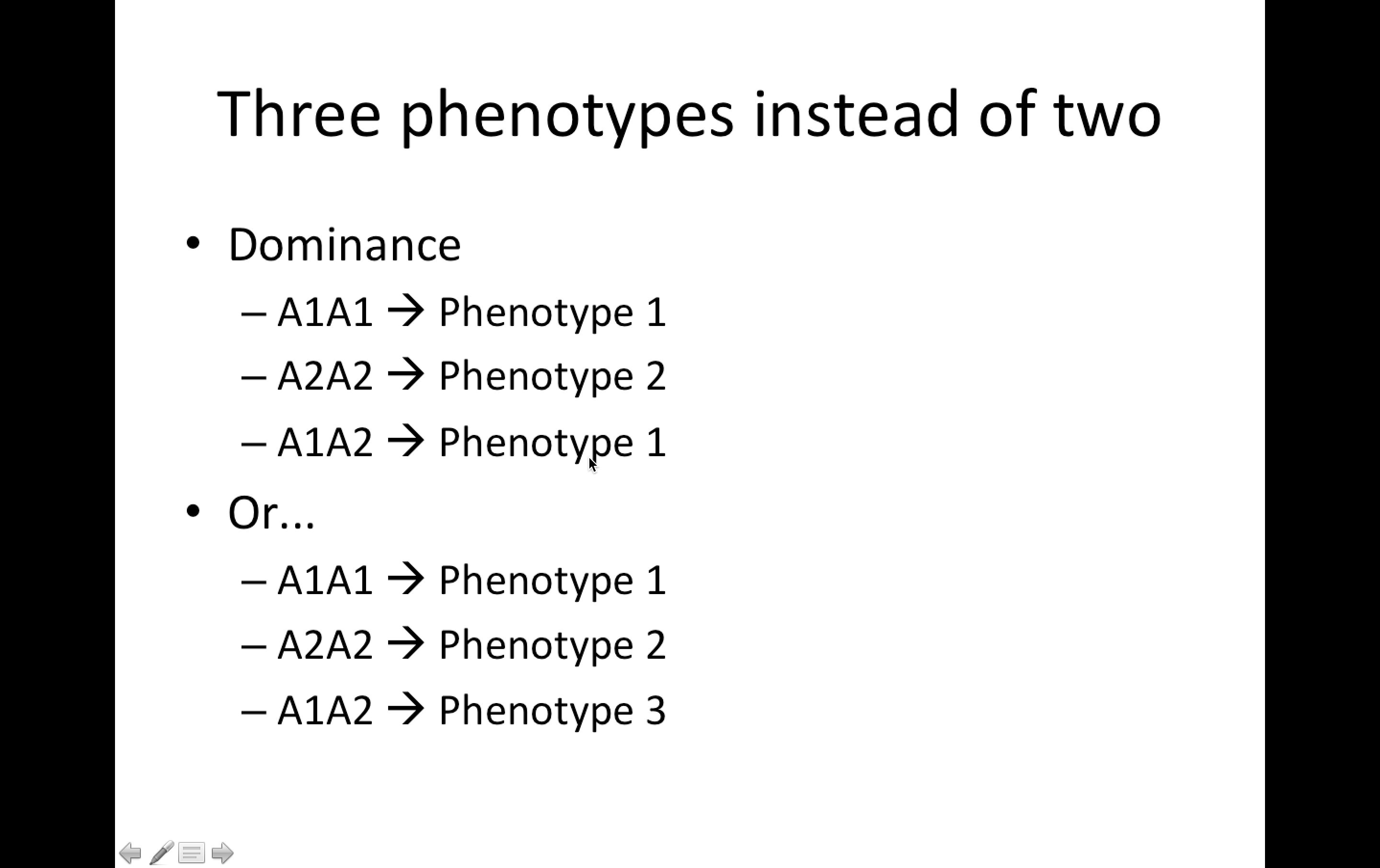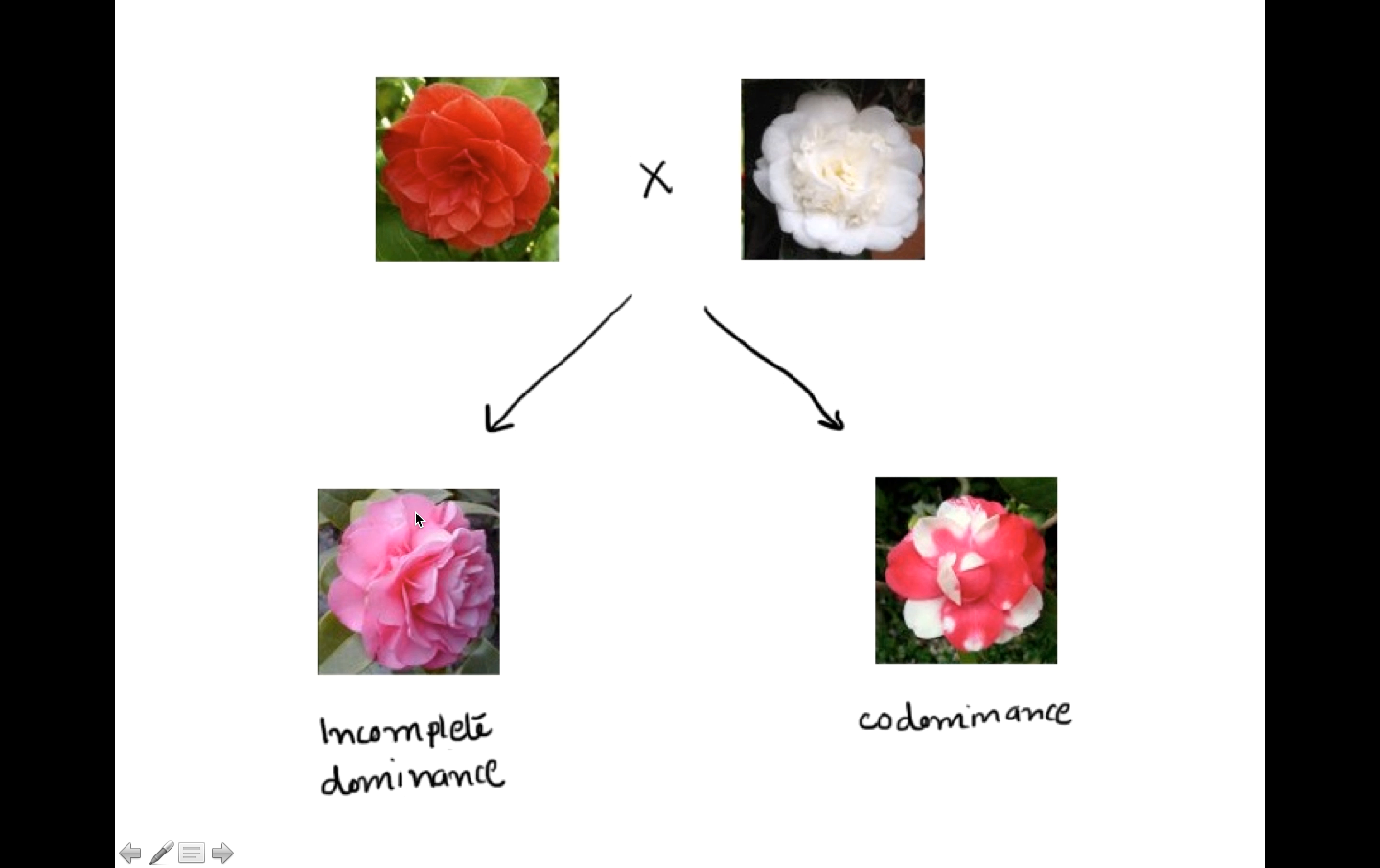But it could be the case. We've spent so much time in our lives when we learn genetics focusing on this case that we sort of think of it as being normal or usual. But in fact, it can often be the case that we have a different situation where we have our two homozygous genotypes have two different phenotypes, but then our heterozygote will have a third phenotype. And so, as I said, this is called incomplete dominance or codominance. Incomplete because one allele is not fully dominating over the other, or codominance meaning that they're both seen. But I don't care too much about this distinction. I'm just going to suggest that we distinguish dominance versus non-dominance.